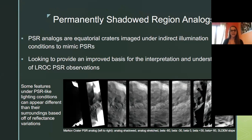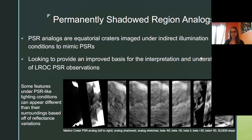I have been working on a project with the Lunar Reconnaissance Orbiter Camera. We're looking at permanently shadowed region analogs. These analogs are equatorial craters that are imaged under indirect illumination to mimic PSR conditions. With these indirect illumination images, we are able to compare them to the direct illuminated images because they're equatorial craters, and from here we're able to look at the different conditions based off their reflectance variations.